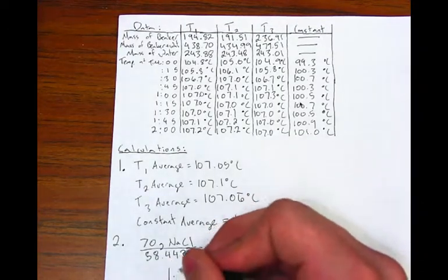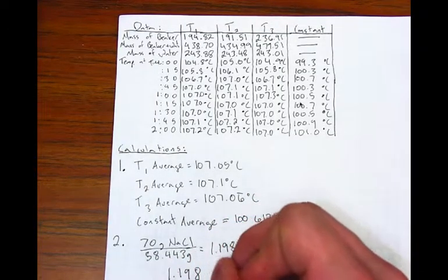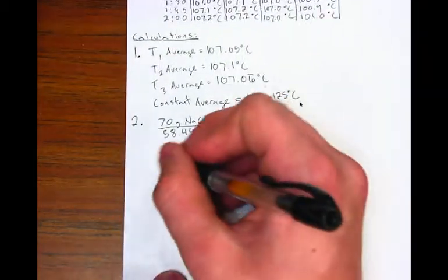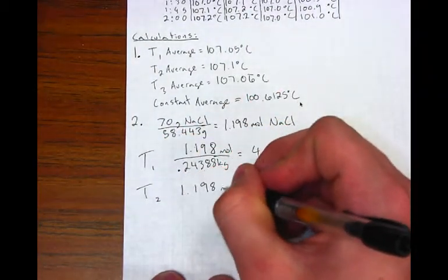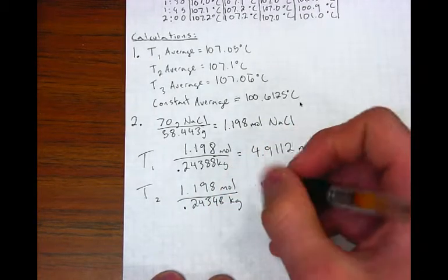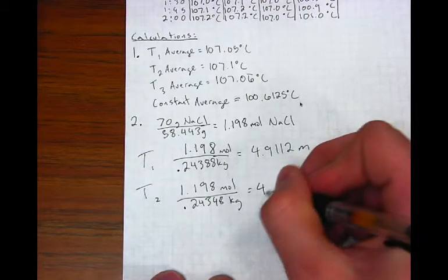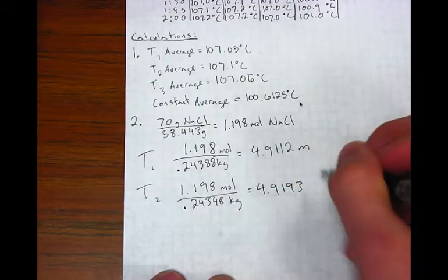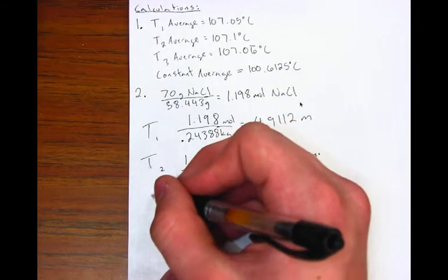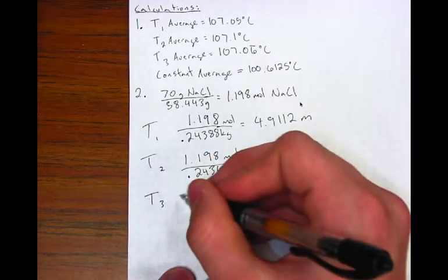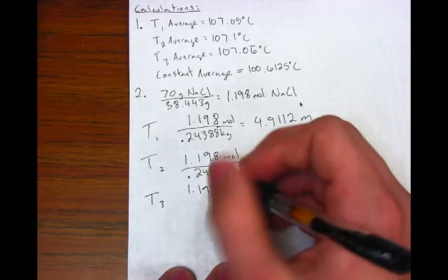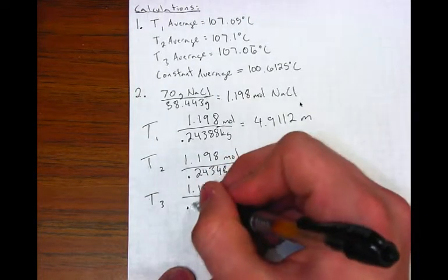70 grams of sodium chloride divided by its molar mass of 58.443 grams gives you 1.198 moles of sodium chloride. Then take the calculated number of moles and divide it by the kilograms and you will find the molality of each trial.